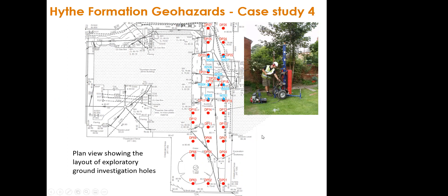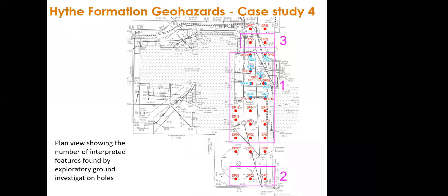Analysis of the exploratory hole results identified three main zones: a large zone centred on the collapse itself, a feature just beyond the edge of the collapse, and another feature further away — all in close proximity to each other within the confined access area between the two buildings.